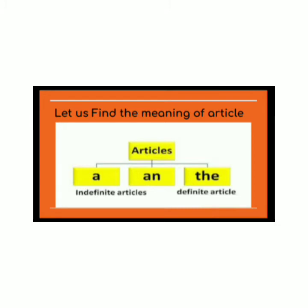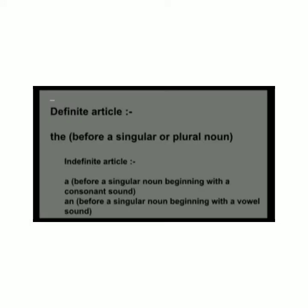Articles are of two types: indefinite and definite. Indefinite articles are 'a' and 'an', and definite articles are 'the'. Definite articles use 'the' before a singular or plural noun.